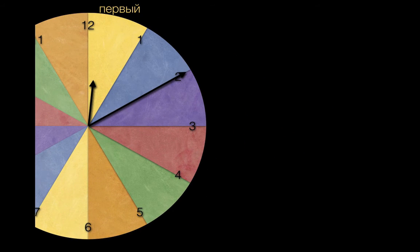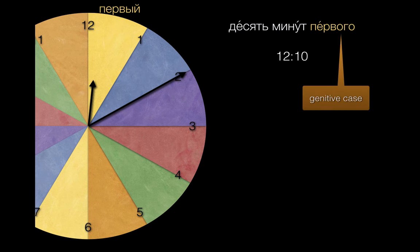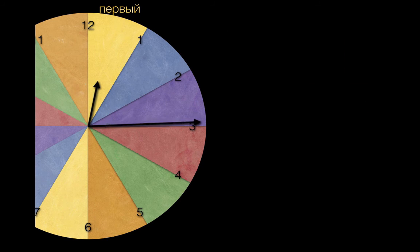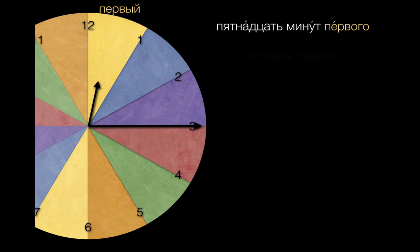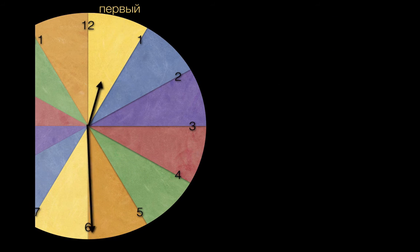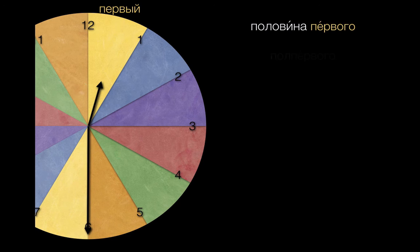So, if we've come 10 minutes into the first hour, we'll say «10 минут первого». Note that we're using the genitive case of the ordinal here — literally, «10 minutes of the first». If we are 15 minutes into the first hour, we can say «15 минут первого», or you'll also hear «четверть первого», a quarter of the first. And at a half an hour in, we can use the word for half, «половина», though we often use a shorter form, «пол» — «пол первого».